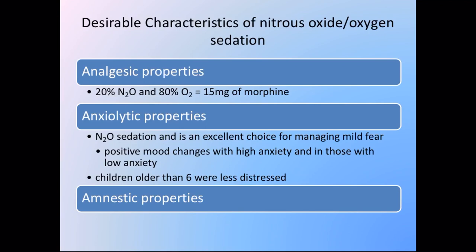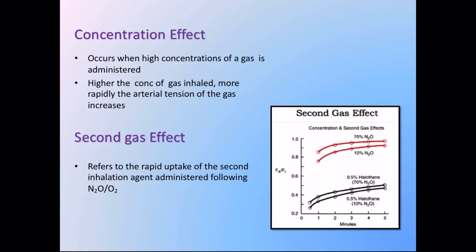Nitrous oxide has analgesic, anxiolytic, and amnestic properties. Characteristic features include the concentration effect: the higher the concentration of gas inhaled, the more rapidly the arterial tension increases. The second gas effect refers to the rapid uptake of a second inhalation agent administered following nitrous oxide — if nitrous oxide is used for induction, this influences the rapid uptake of any subsequently introduced agent.